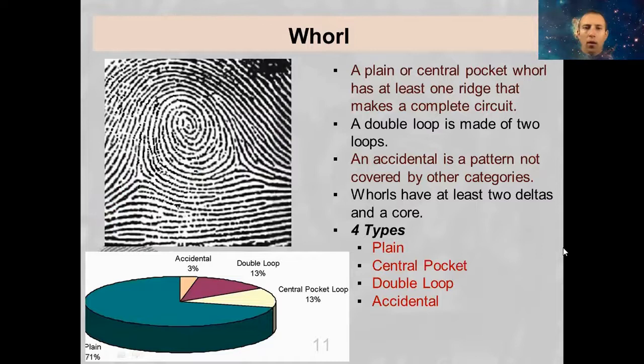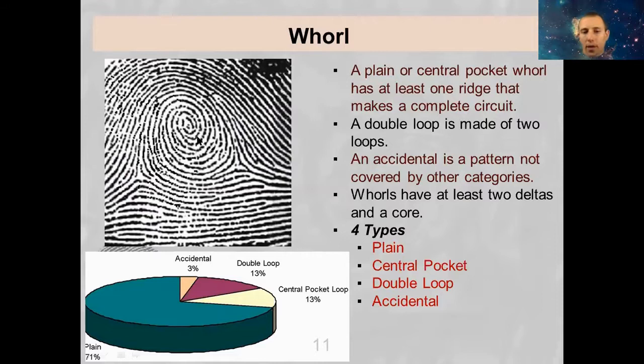So here we have a whorl. We had arches, we have loops, and we have whorls. Whorls are actually going to be pretty easy to identify, but there are multiple types and telling the difference between them might be a little tricky. A whorl is going to have two deltas — you can pretty clearly see these two triangle shapes — and then you have this spiral pattern in the middle. So we've got a core in the middle and then two deltas on the side.